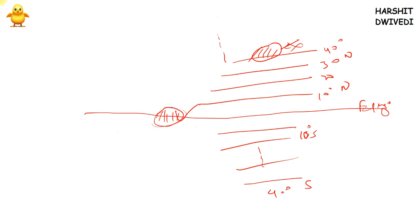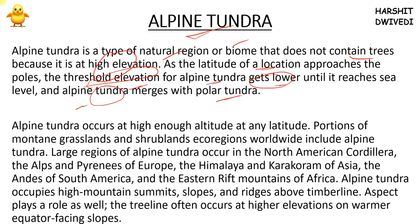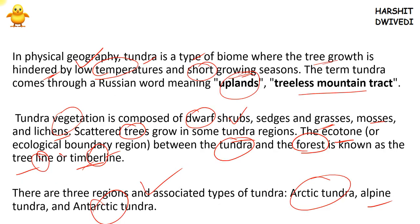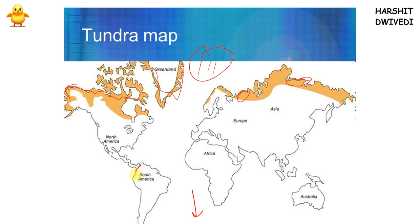So in alpine tundra, it is very important to have a very high altitude, no matter where that particular mountain is. Alpine tundra is found in: North America Cordillera, the Alps and Pyrenees of Europe, the Himalayan and Karakorum ranges of Asia, the Andes of South America, and the East Rift Mountains of Africa. On the map, you can see the Andes, Northern Cordillera, Alps, Himalayas and Karakorum range, and the Urals as locations where alpine tundra biome is found.